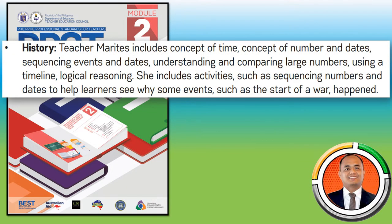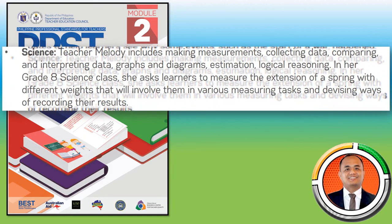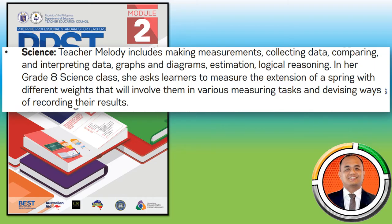We can use this in a history class. Teacher Marites included concepts of time such as dates, sequence of events, understanding and comparing large numbers, use of timelines, and logical reasoning. Her activities included sequencing numbers and dates to help students see why certain events occurred, such as the start of a war. In science class, Teacher Melody included measuring, collecting data, comparing and interpreting data in graphs and diagrams, estimating, and giving logical reasoning.